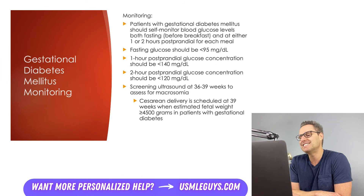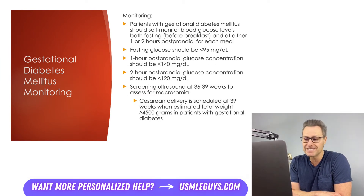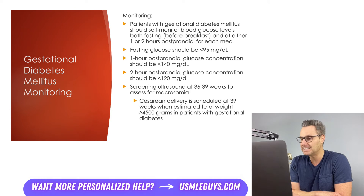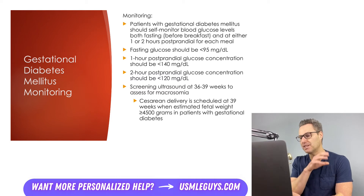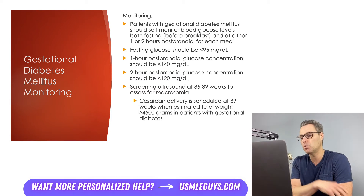After a patient receives a diagnosis of gestational diabetes, daily monitoring is performed to ensure glucose targets are being achieved. Patients should self-monitor blood glucose levels both fasting — that is, before breakfast — and at either one or two hours postprandial. Fasting glucose should be less than 95 mg/dL, one-hour postprandial glucose should be less than 140, and two-hour postprandial glucose should be less than 120.